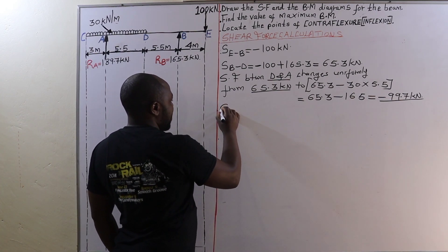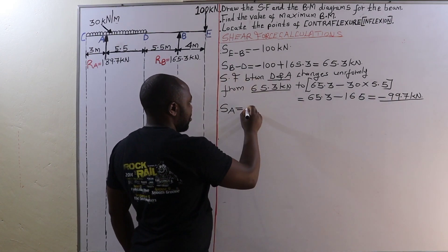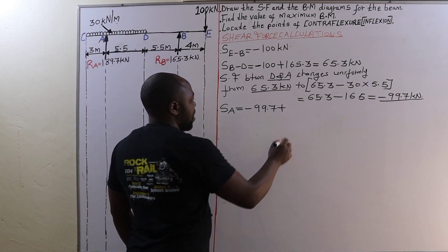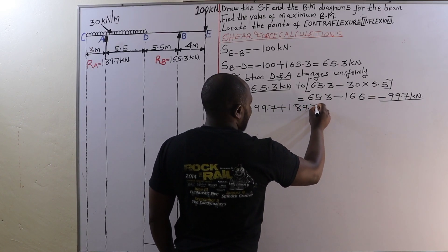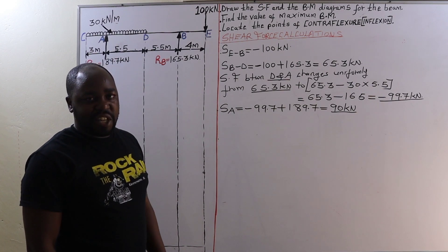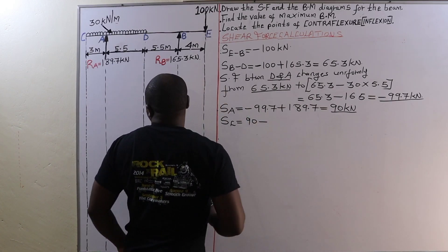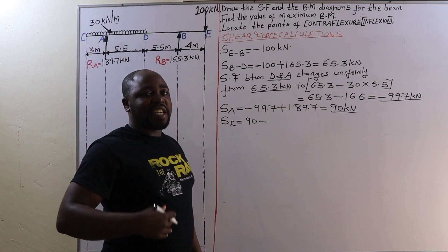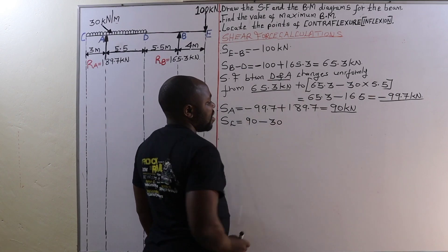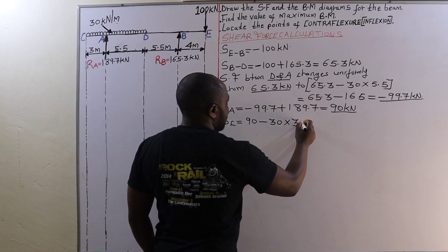The shear force at point A will be negative 99.7 kilonewtons plus — because RA is upward acting — plus 189.7 kilonewtons, giving 90 kilonewtons. That is the shear force at point A. The shear force at point C is 90 kilonewtons minus the UDL between A and C: 30 kilonewtons per meter over 3 meters, converting that UDL to a point load. This gives us zero.